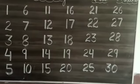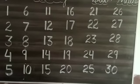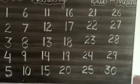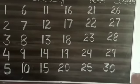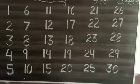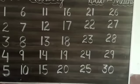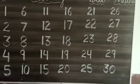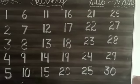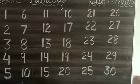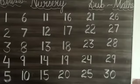1, 2, 3, 4, 5, 6, 7, 8, 9, 1, 0, 10. 1, 1, 11, 1, 2, 12, 1, 3, 13, 1, 4, 14, 1, 5, 15, 1, 6, 16, 1, 7, 17, 1, 8, 18, 1, 9, 19, 2, 0, 20.